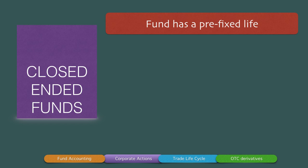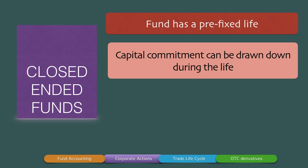A closed-ended fund has a pre-fixed life. This means that the fund has to live its life of about seven, eight, or nine years — whatever it is. Because the duration of the fund is predetermined, partners make a capital commitment at the start of the fund, normally accompanied with the signing of the limited partnership agreement, because the capital commitment has to be known to the fund manager before he can permit the limited partner to contribute to the capital.